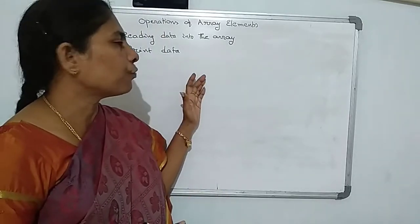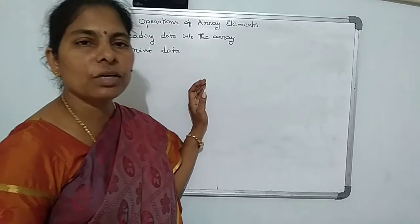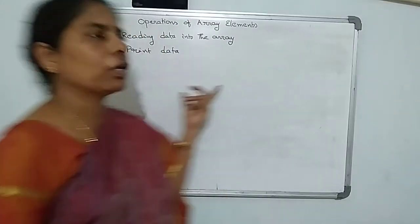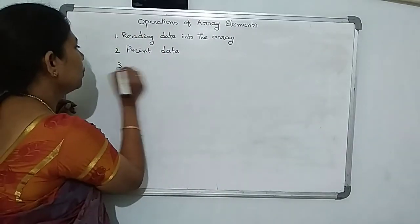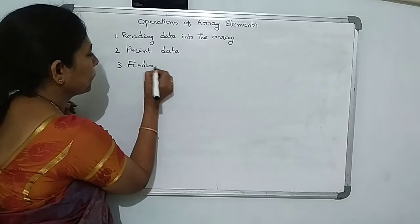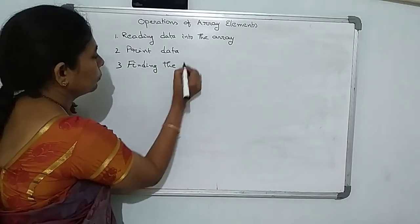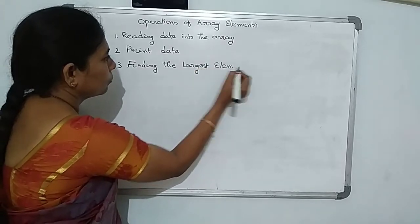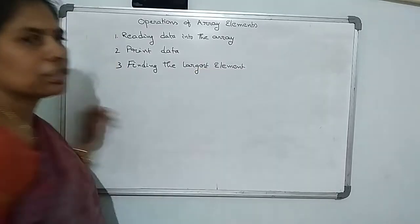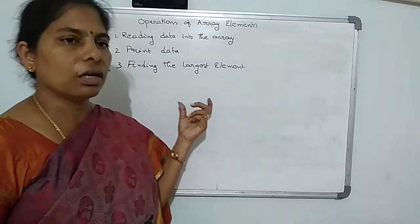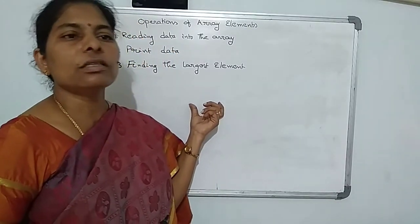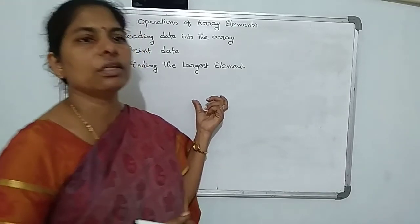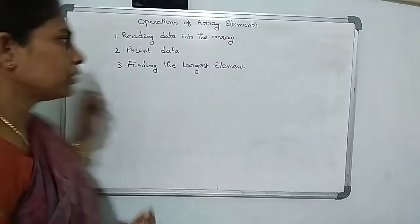If you are using the arrays, each and every operation must be done using looping — specifically, the for loop. The next operation is finding the largest element within the given array. You can also find the sum of the array elements and the average of the elements of the array.